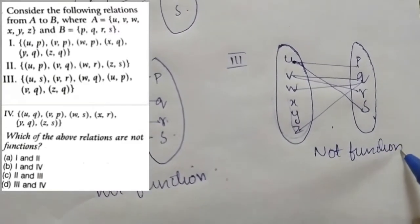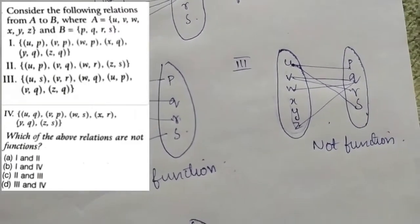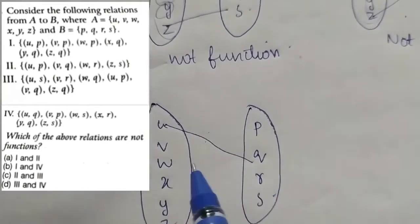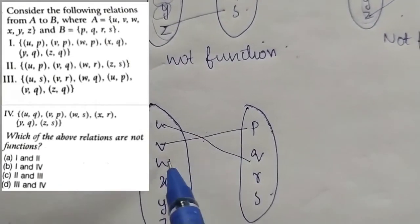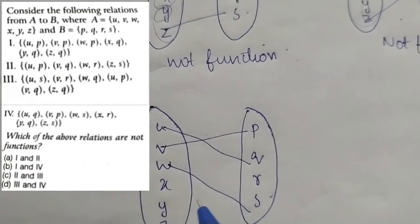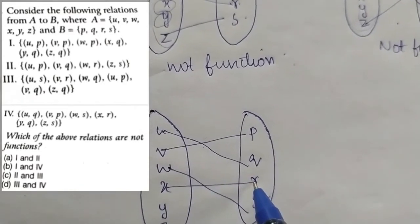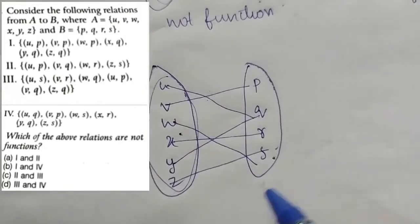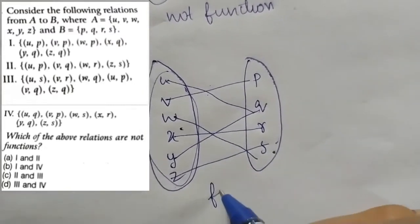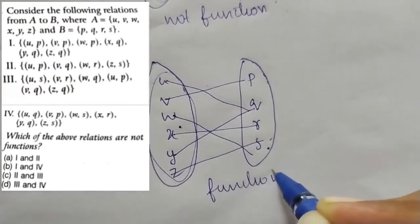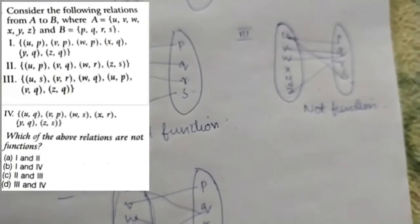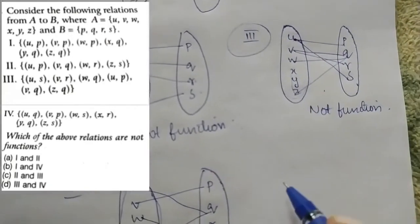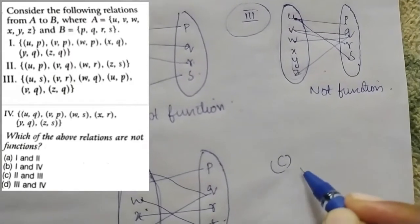The fourth one: U→Q, V→S, X→R, Y→Q, Z→S. But not all elements are mapped. This is not a function. The second one and the third one are the functions — that is the right answer.